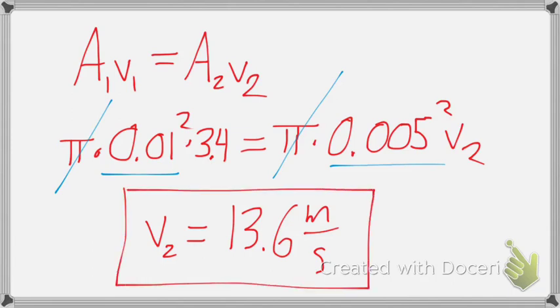Nice. So simply by just covering up half of the hose, he's changed the velocity from only 3.4 meters per second to 13.6 meters per second. And that's how powerful the continuity equation can be.